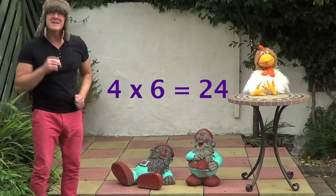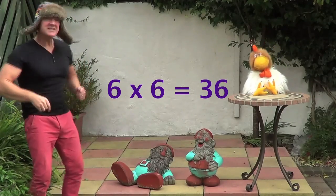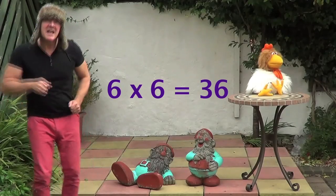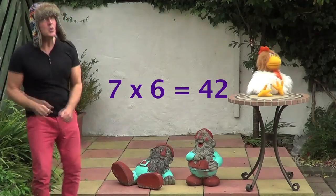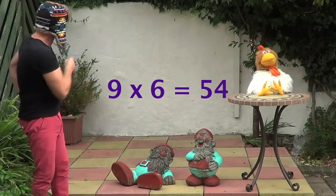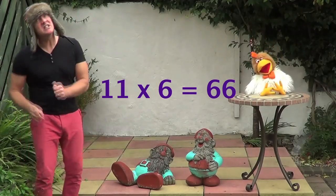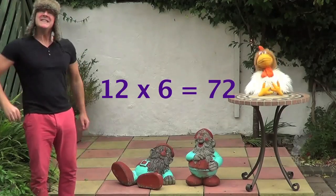18, 4 x 6 is 24, 5 x 6 is 30, 6 x 6 is 36, 7 x 6 is 42, 8 x 6 is 48, 9 x 6 is 54, 10 x 6 is 60, 11 x 6 is 66, 12 x 6 is 72.